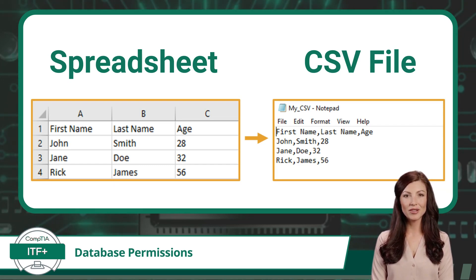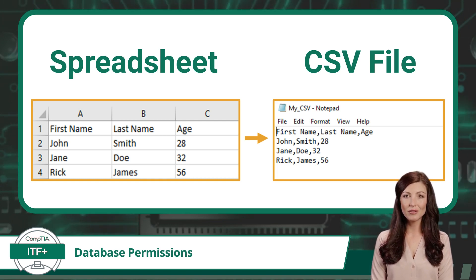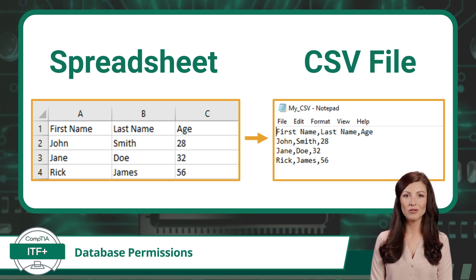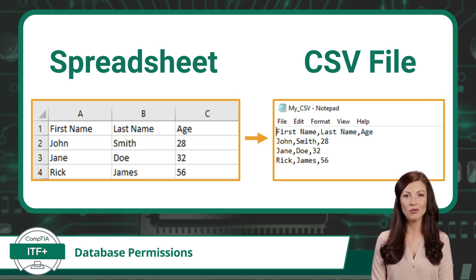One common way to do this is by using CSV files. A CSV, or comma-separated values file, is a simple and widely used file format for storing structured data. A CSV file is often used for data exchange between different software applications, including databases, and is easy for both humans and computers to read.